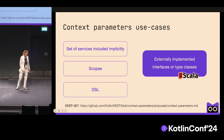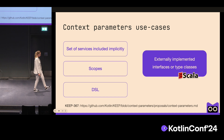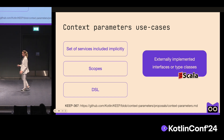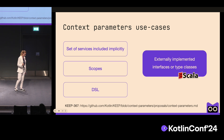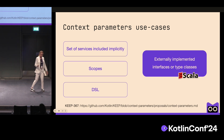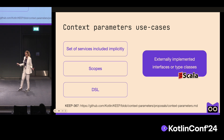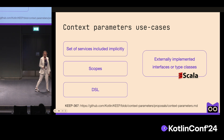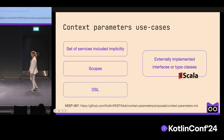Also, if you are familiar with Scala, you probably know a pattern called type classes. With context parameters, you can create externally implemented interfaces, or type classes, in Kotlin. Unfortunately, we don't have enough time to cover this use case in detail, but you can read about it in the context parameters KEEP. This list covers all the popular use cases for context parameters, discovered based on your feedback during the design process.